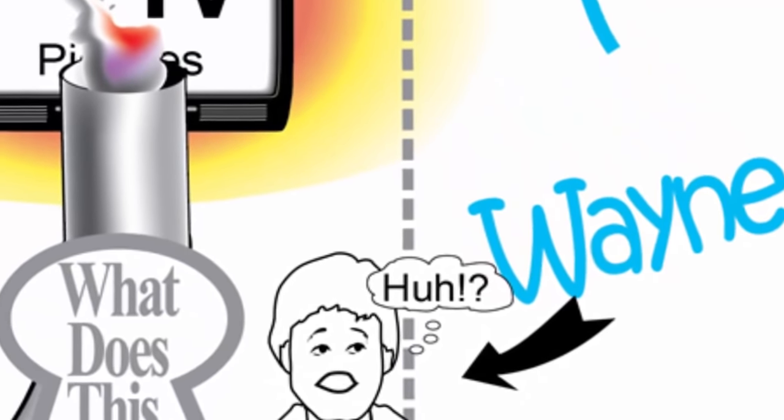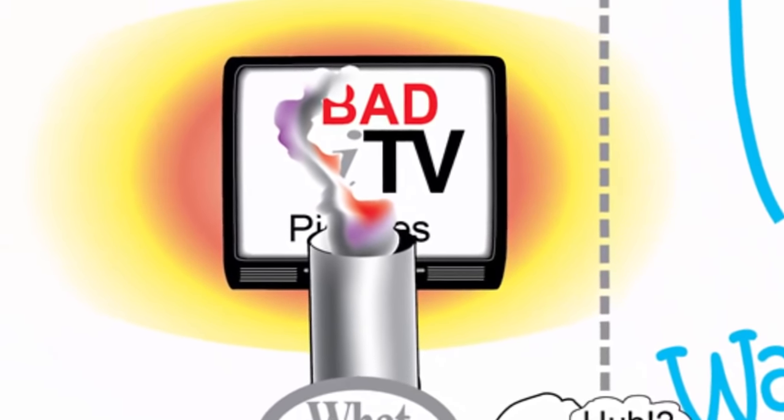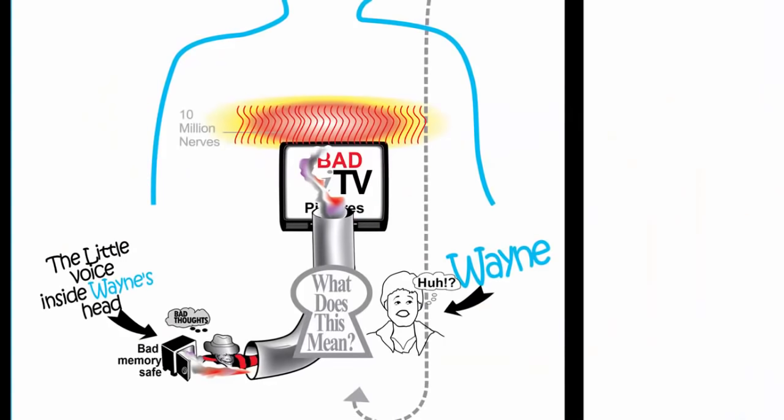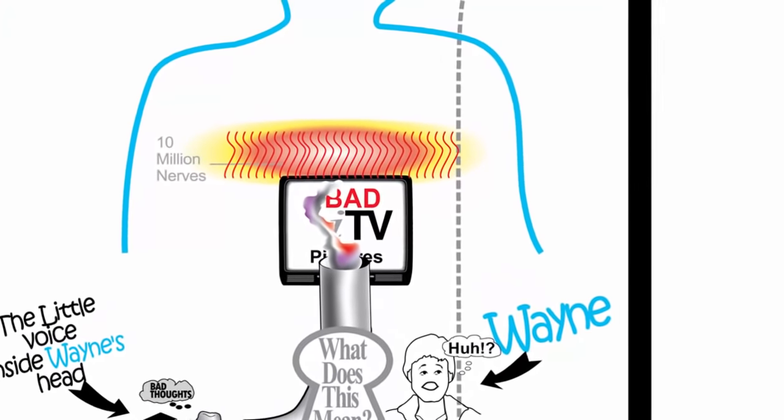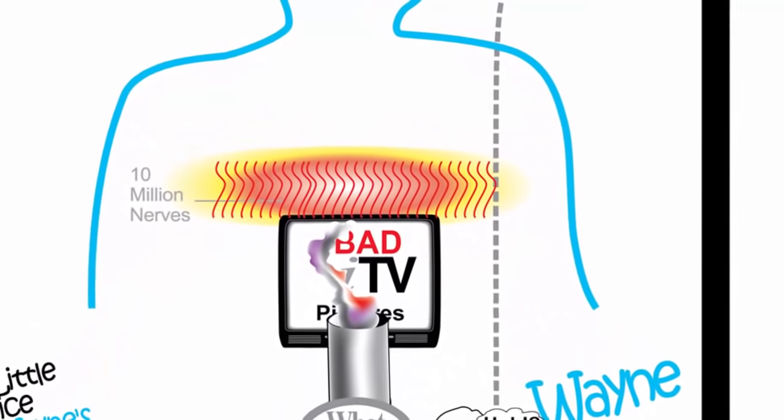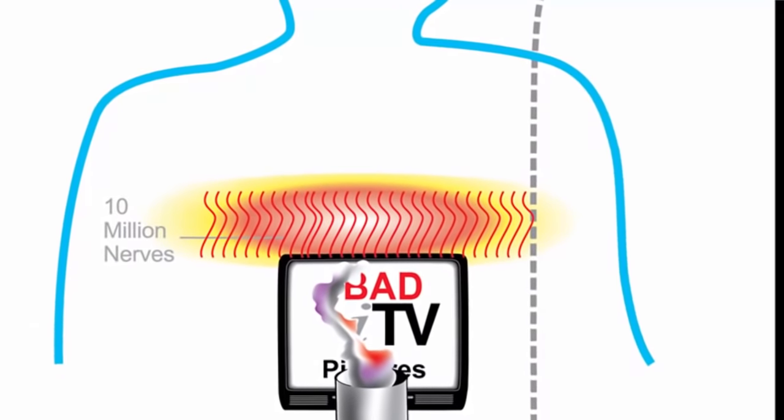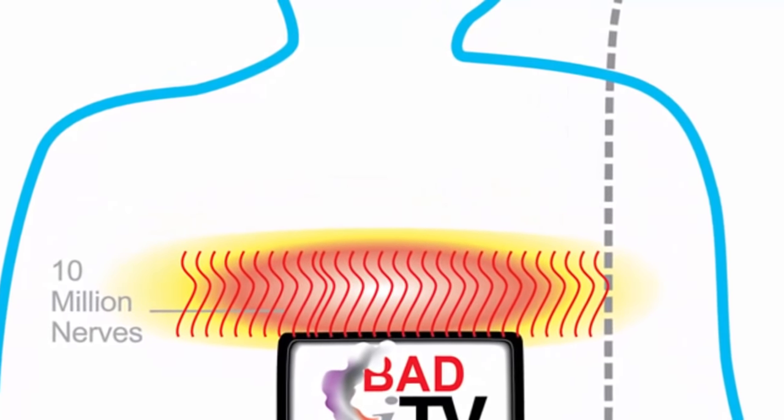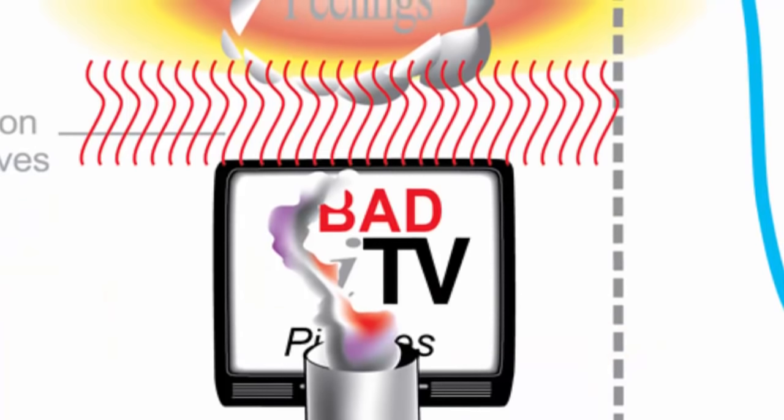Wayne's little negative voice produces then a movie playing on his ITV, his imagination television. Once that little voice plays this bad movie in Wayne's imagination TV, an amazing thing happens. Wayne's 10 million nerve nervous system is suddenly convinced that this bad movie playing on the ITV is real. When Wayne's nervous system is convinced the bad movie is real, it produces Wayne's feelings.